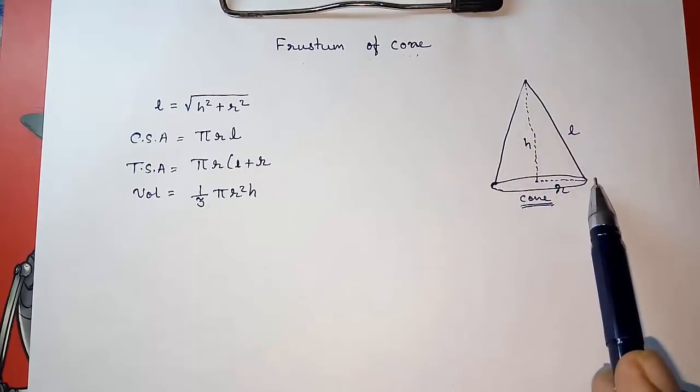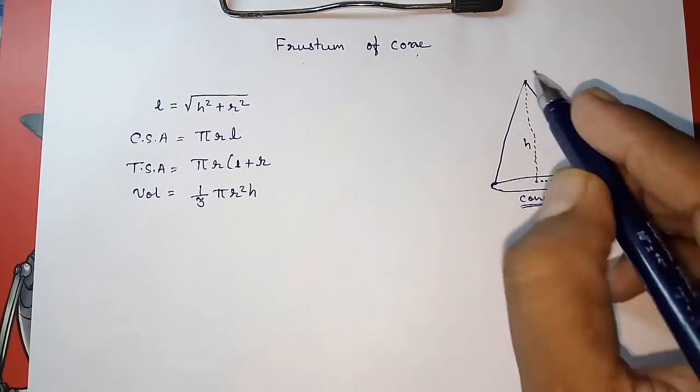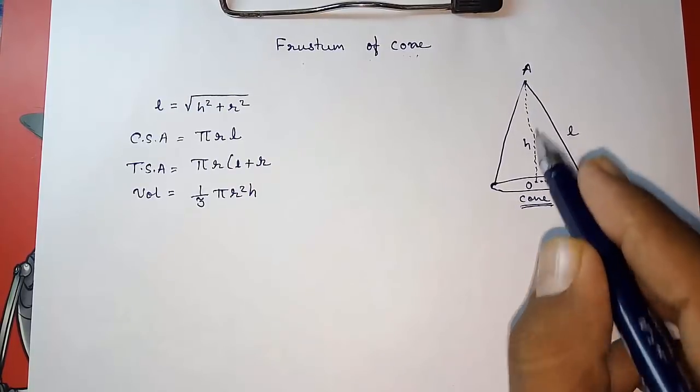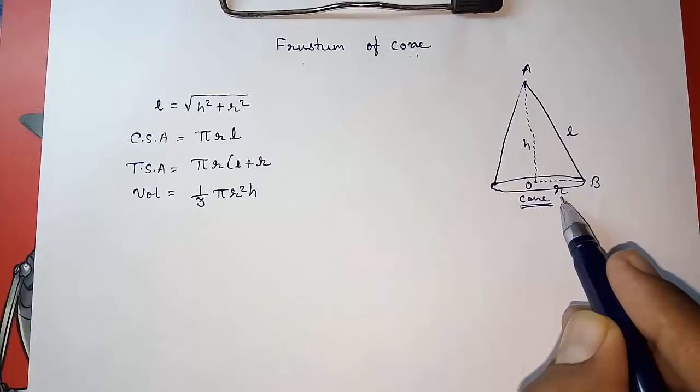Look here, this is a cone. This height from point A to B is called slant height, from A to O that is height, and OB is the radius.